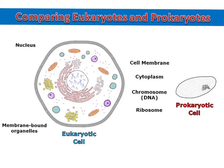Both eukaryotic and prokaryotic cells are surrounded by a cell membrane, which controls what can enter and exit the cell. They are both full of a gel-like substance called cytoplasm, which contains all the water, nutrients, and organelles the cell needs.